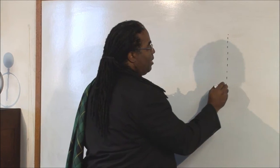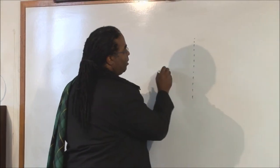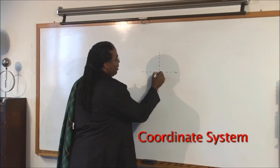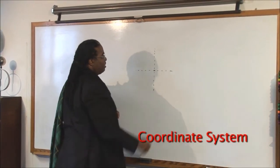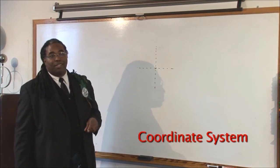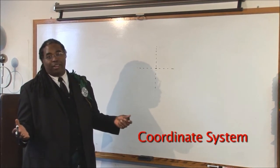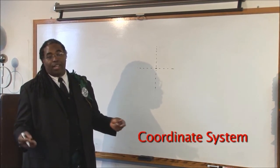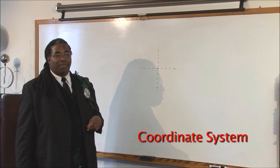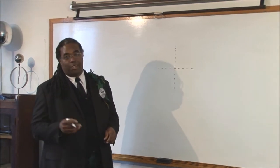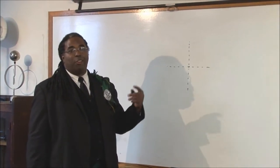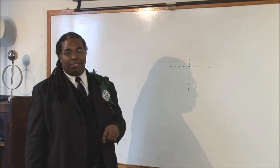Right now, I'm drawing something called a coordinate system. It has a lot of names. Some people call it an x-y coordinate system, x-y coordinate plane, or a Cartesian coordinate system. Another one is an orthogonal coordinate system — orthogonal meaning at right angles.